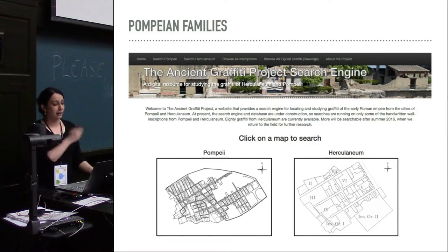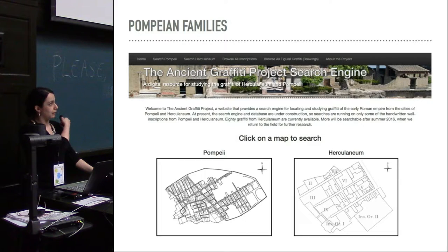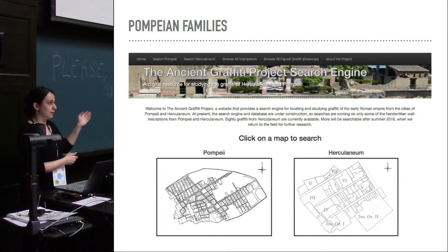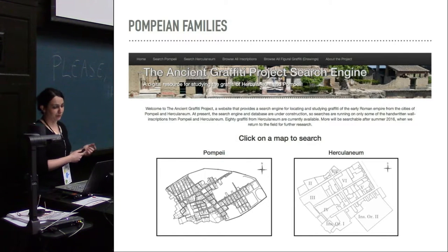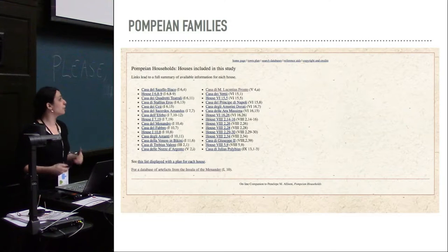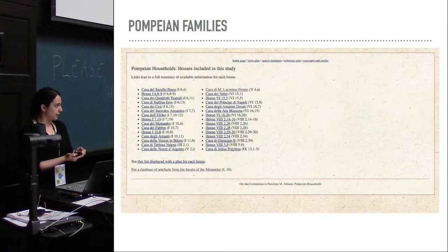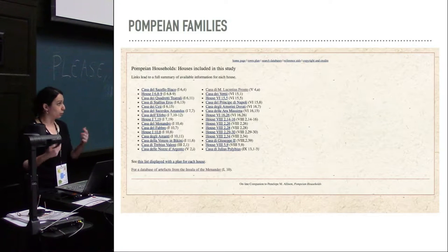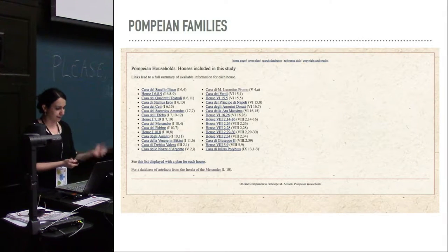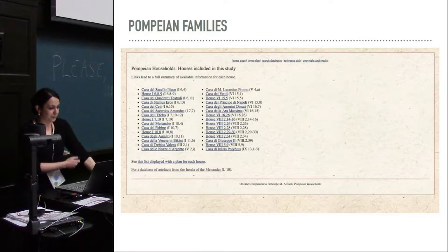The same goes for the Ancient Graffiti Project, which works on which specific building a graffito in Pompeii or Herculaneum was found in — sometimes even the specific wall — and the Pompeian households project and so on. All these different and sometimes unrelated projects could be grouped together and information harvested if they all refer to the same Pleiades URI for the specific place.